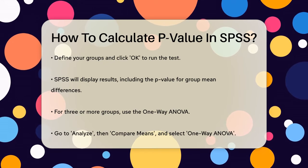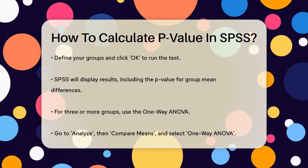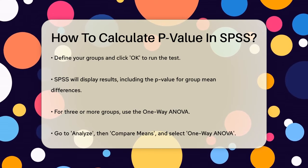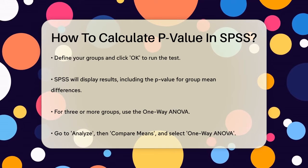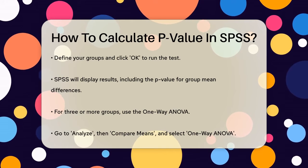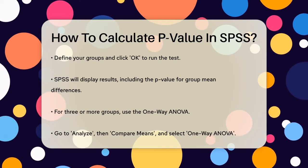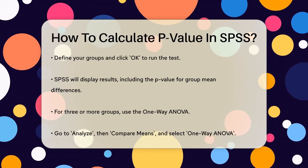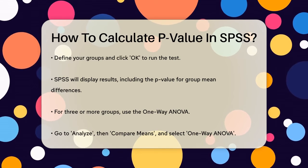For comparing means across three or more groups, you'll use the one-way ANOVA. Navigate to Analyze, then Compare Means, and select One-way ANOVA.